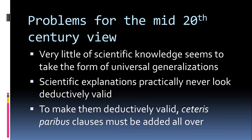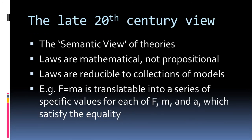Somewhere in the late 20th century we shifted to the semantic view of theories, which held that laws are fundamentally mathematical — not propositional. So instead of universal generalizations in logic, we have equations in math as the standard unit of scientific theories. These laws are understood as reducible to collections of models in a specific sense: F=ma is translatable into a series of specific values for F, M, and A which satisfy the equality. The models of that law are any way of filling in F, M, and A that satisfies that equality.